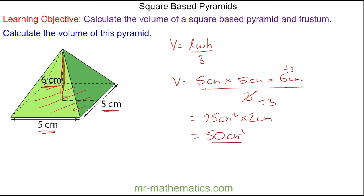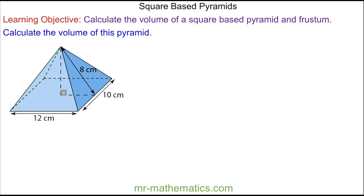Okay, let's try another question. Again, we're going to use the formula: volume equals the length multiplied by the width — the area of the base — multiplied by the perpendicular height, divided by three. However, you can see the perpendicular height in this question is not given.